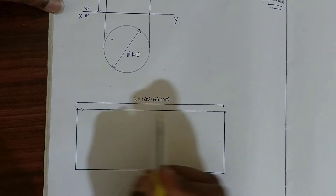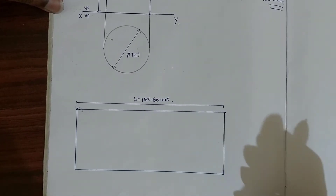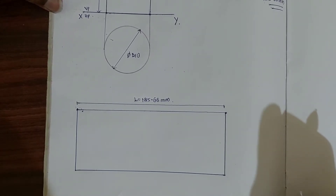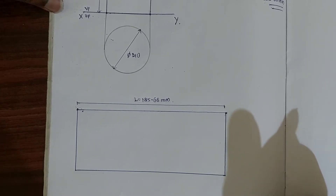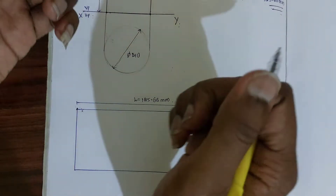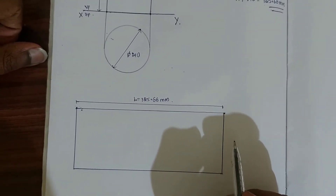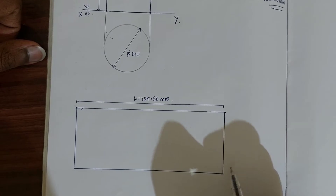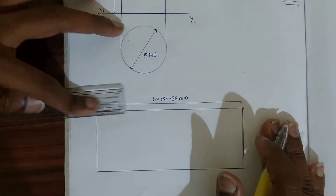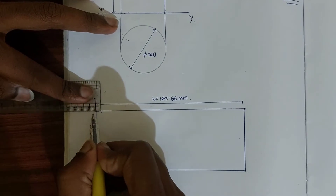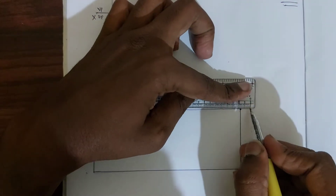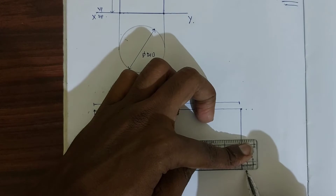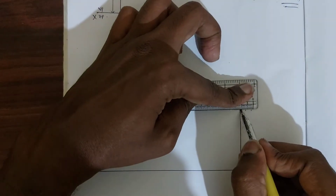When developing the cylinder, it is important to add extra dimensional allowance for the seaming operation. Seaming is a joint created to join the two adjoining ends of the cylinder after rolling. To do the seaming operation, we need extra space to lock the joints — I'm leaving 5mm on one side and 5mm on the other side, with 10mm total.